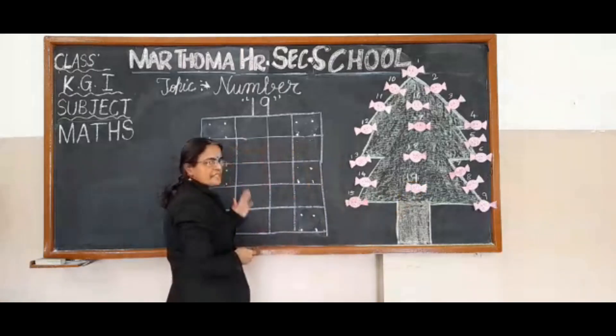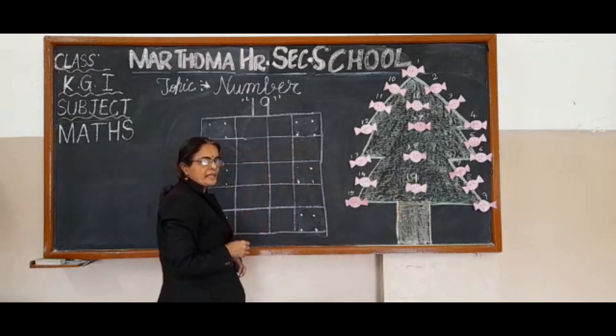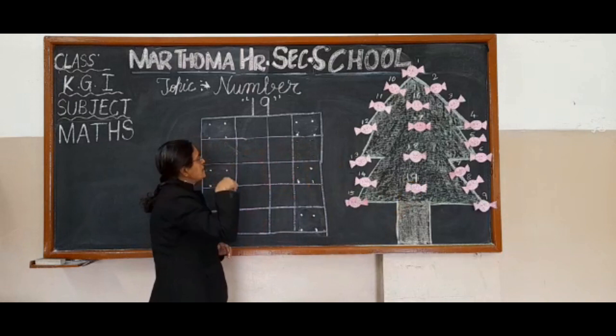Now let us write. Number 19. How to write? 1, 9, 19.